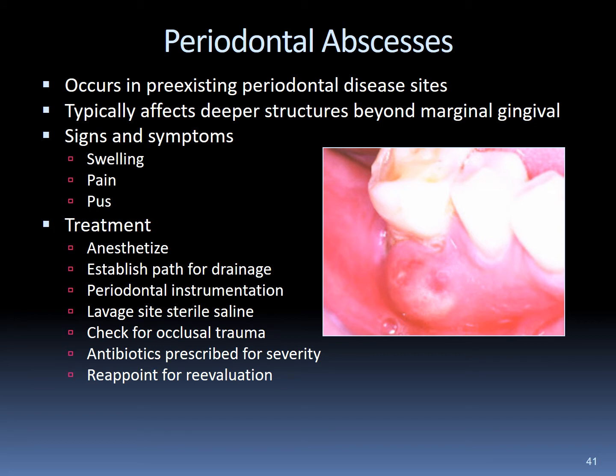Periodontal abscesses occur in pre-existing periodontal disease sites and typically affect deeper structures of the periodontium beyond the marginal gingiva. Signs and symptoms include swelling, pain, and pus. Treatment requires anesthetizing the area to establish a path of drainage. Periodontal instrumentation and lavaging the site with sterile saline is recommended. It may be necessary to check for occlusal trauma. Antibiotics are prescribed in severe cases, and reappointment for evaluation is necessary.